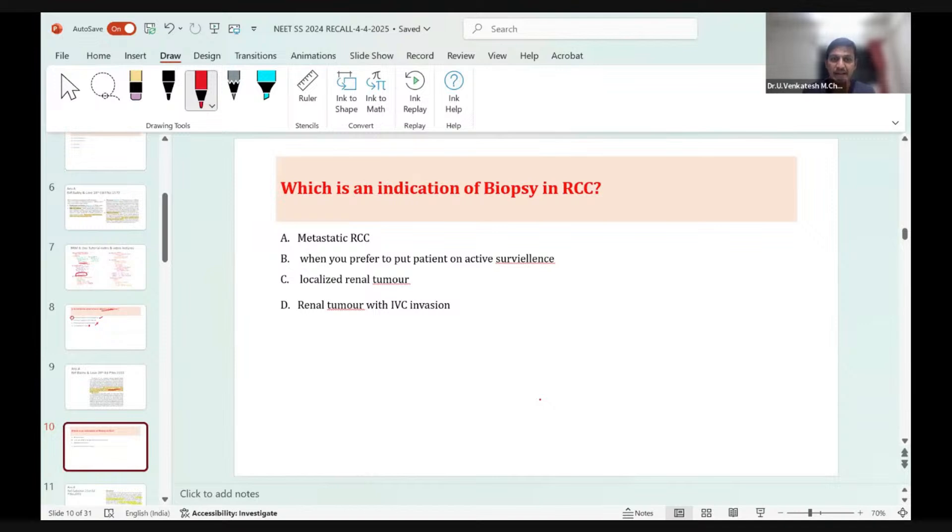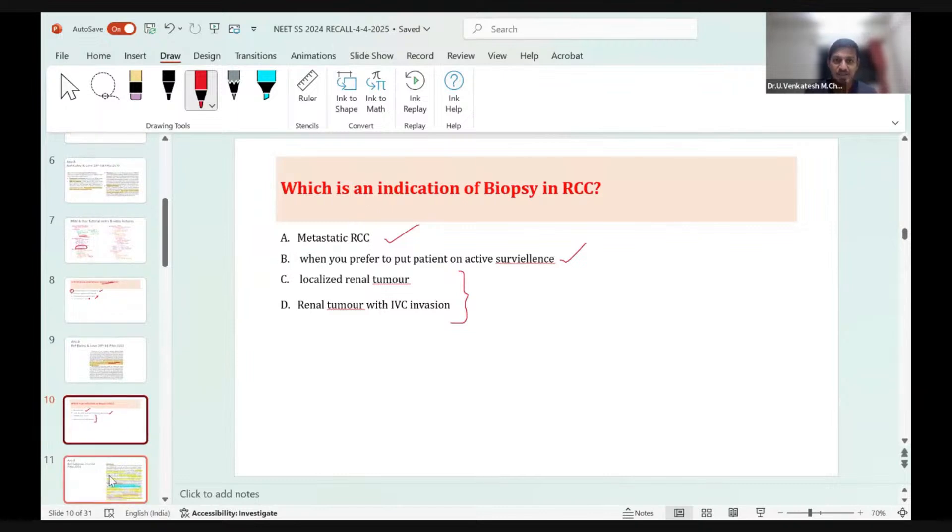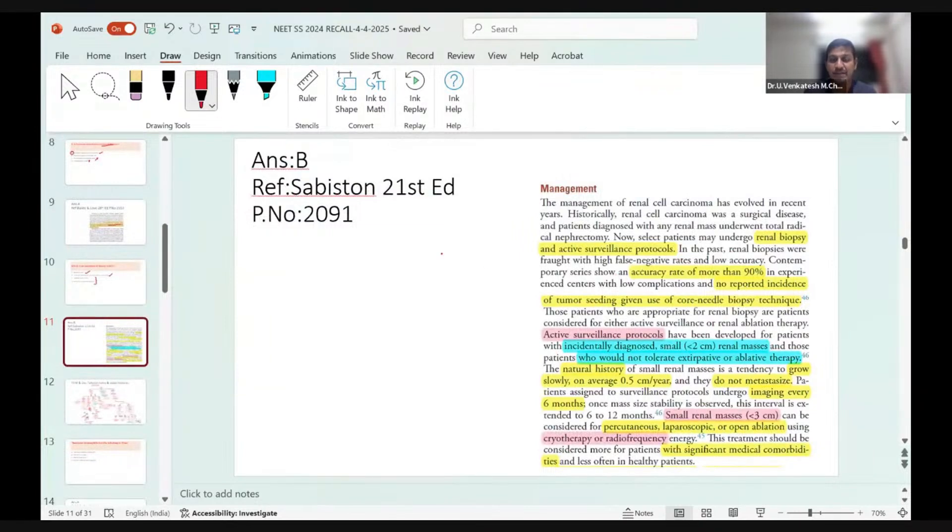Which of the following is an indication of biopsy in RCC? This was a difficult question not directly from Bailey or Sabiston, but I discussed it during sessions with additional references from Campbell. Options were metastatic RCC, active surveillance, localized renal tumor, and renal tumor with invasion. For renal tumor there's no need for biopsy-proven diagnosis. Any enhancing nodule on contrast CT is likely renal tumor unless proven otherwise. For localized or invasive tumors, you can go for upfront radical surgery. The only place we do biopsy is when we suspect metastatic RCC and need to put the patient on active surveillance.